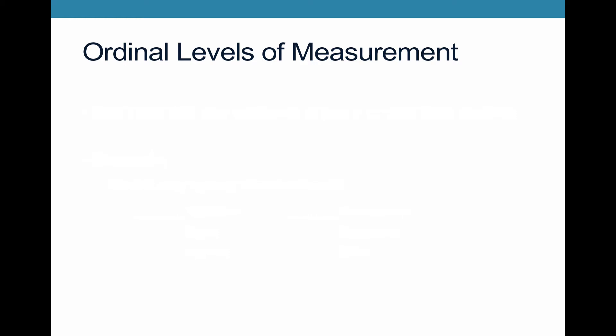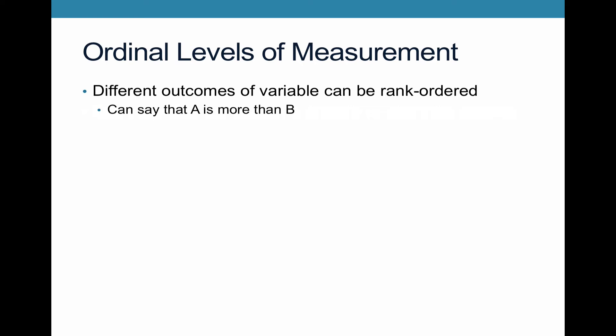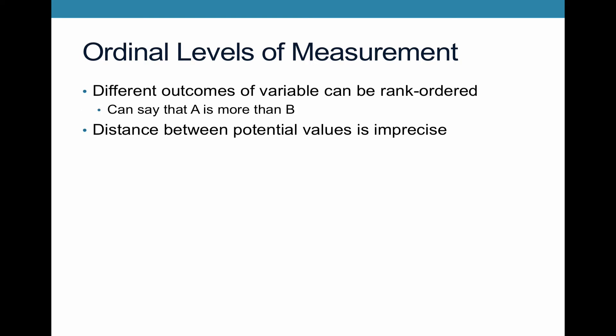Second, ordinal levels of measurement. For an ordinal level of measurement, the different outcomes of a variable can indeed be rank ordered — you can say that A is more than B. But the distance between those different values is really imprecise. We don't know how much more A is than B, even if we can say for sure that it is.